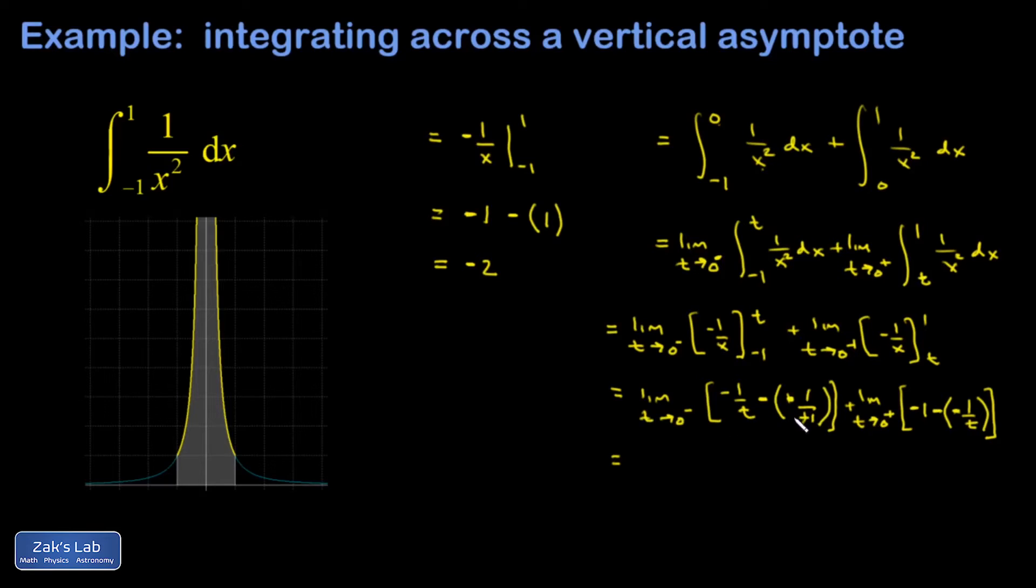The limit of a constant is just a constant, so I'm going to pull that out of this first one. I have a negative 1. When I take the limit, I just get negative 1. In the second one, I have a limit of negative 1 as well, so I'm just going to collect those out in front. Then I have these two interesting limits: the limit as t goes to 0 from the left of negative 1 over t.